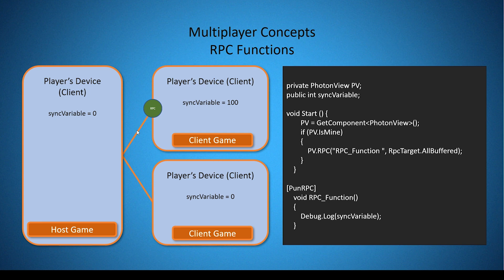Here we have the same multiplayer architecture that we talked about in the last concept video, and here we have a simple script that I've created. This presentation will show two different versions of the RPC function — pay attention to the difference between the two. The first thing you'll need is a PhotonView. Here I have a private PhotonView variable called PV. The PhotonView class belongs to the Photon.pun namespace, so make sure you call 'using Photon.pun' at the top of your script. Within the script, we initialize our PV variable in the Start function by calling PV equals GetComponent and passing in the class name PhotonView, which gets the PhotonView component from the object this script is attached to.